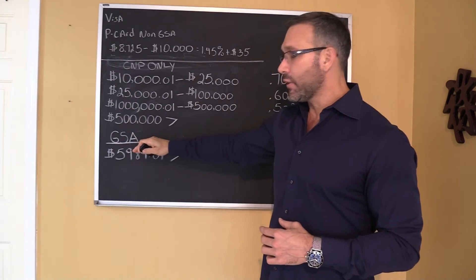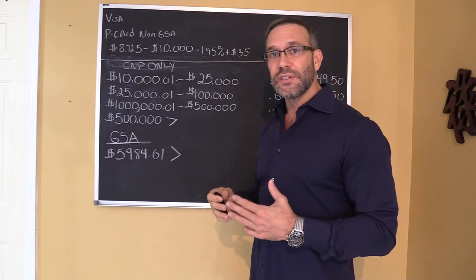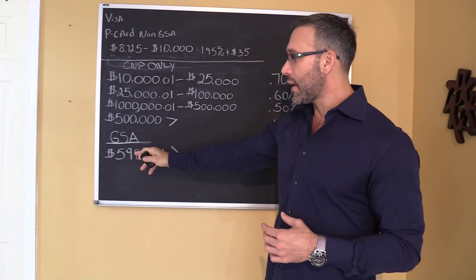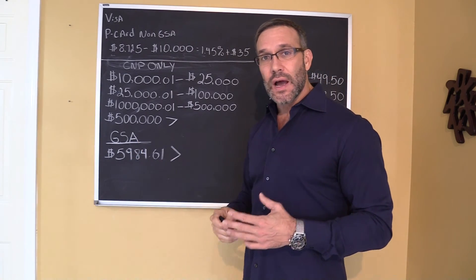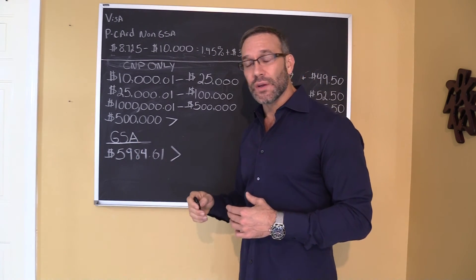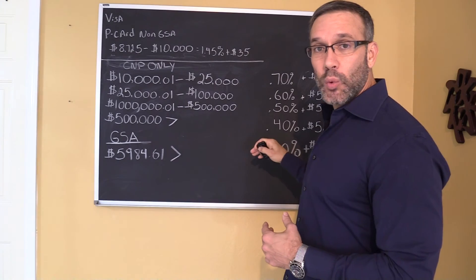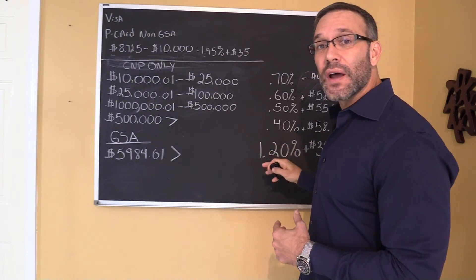So now let's look at your government card. So any large ticket government transaction that you accept over $5,984.61 is only 1.2% and a flat $39.00.